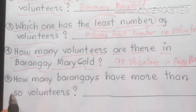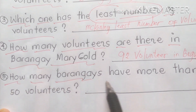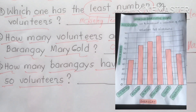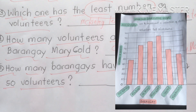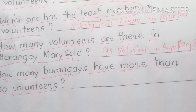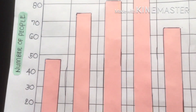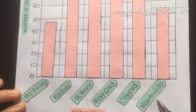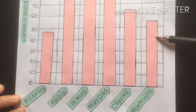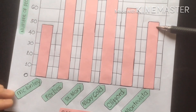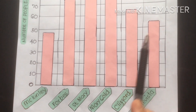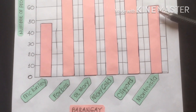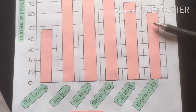Number five: how many barangays have more than 50 volunteers? Let us consider this question. More than 50 — we have our choices. Mackinley and Monte Vista are around 50. Looking for those with more than 50 volunteer poll watchers, we consider Monte Vista with 50 plus.